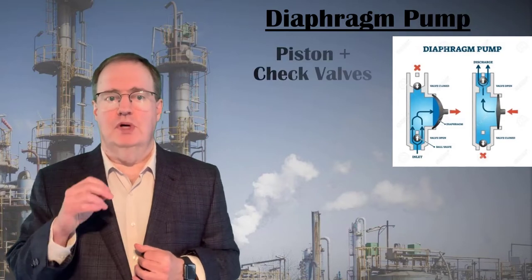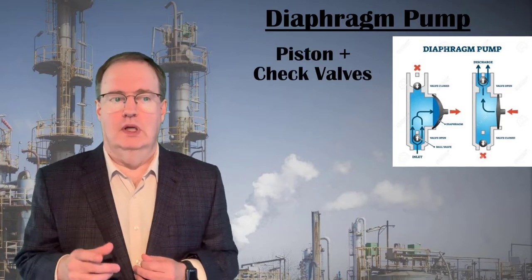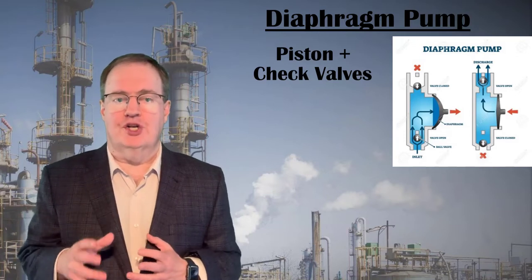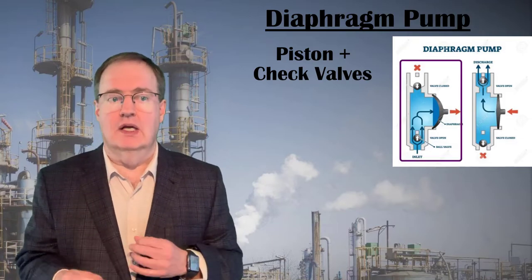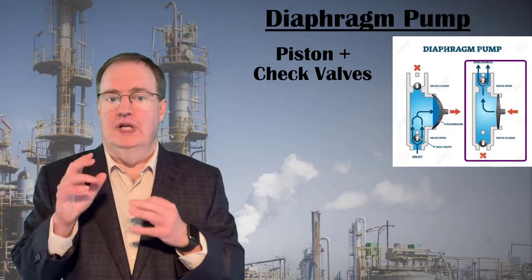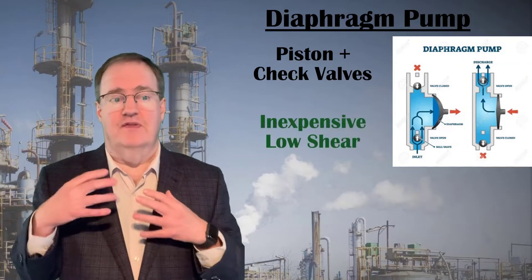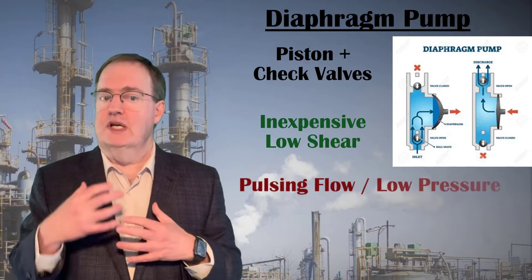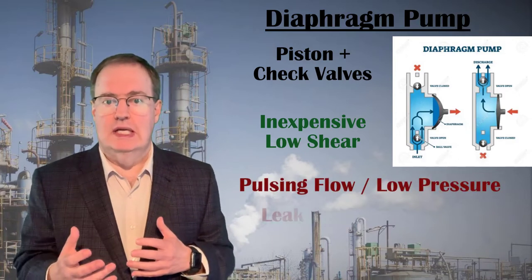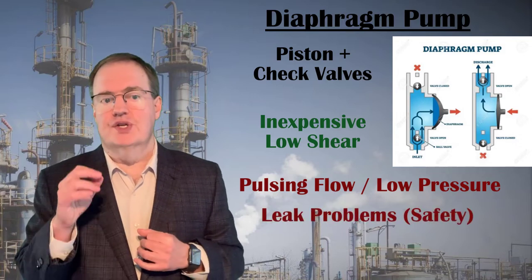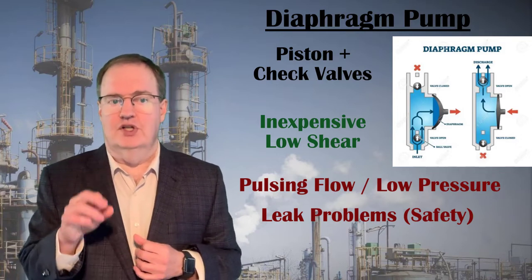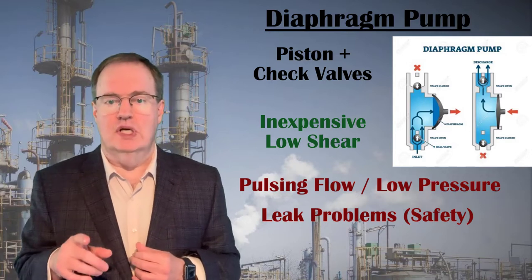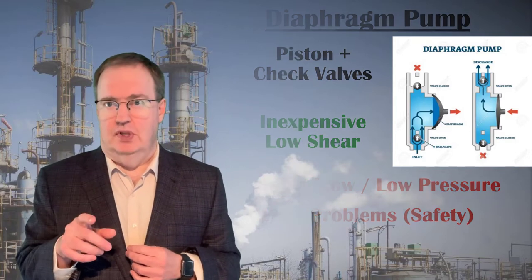Diaphragm pumps use a piston chamber combined with two check valves to force fluids forward. The check valves only allow flow in one direction, while the diaphragm and piston enlarges the chamber to pull fluid in the inlet, then shrinks the chamber to push fluid out the outlet. Diaphragm pumps are inexpensive and very low shear, but they deliver pulsing periodic flow at low pressures. The seals and check valves tend to leak, so there is a significant safety hazard with flammable or toxic fluids. The flow rate delivered depends on the frequency and amplitude of the piston movement. Many metering pumps are diaphragm pumps.